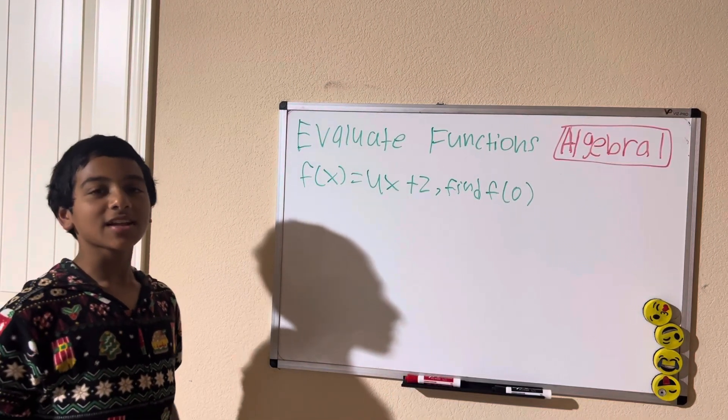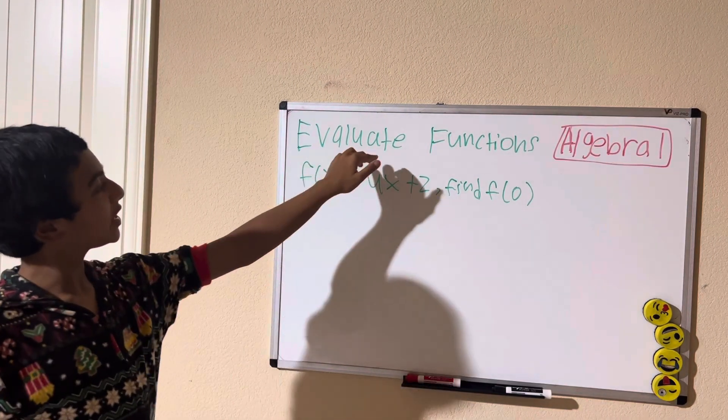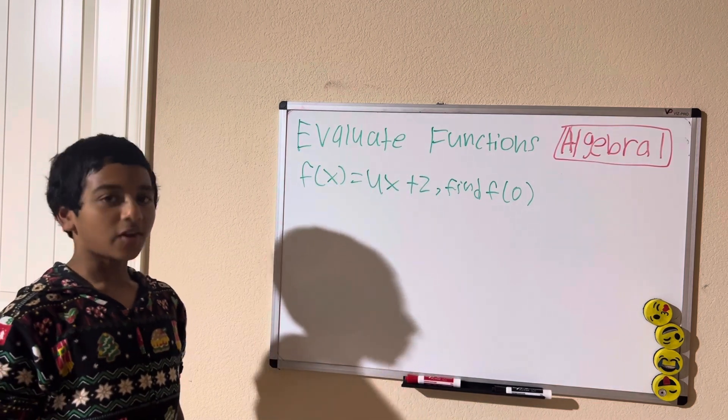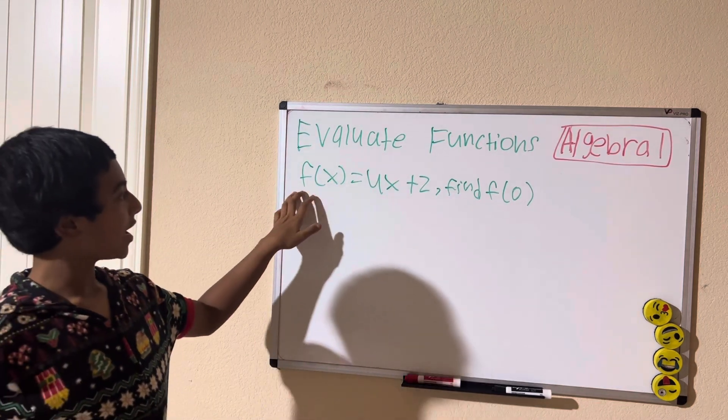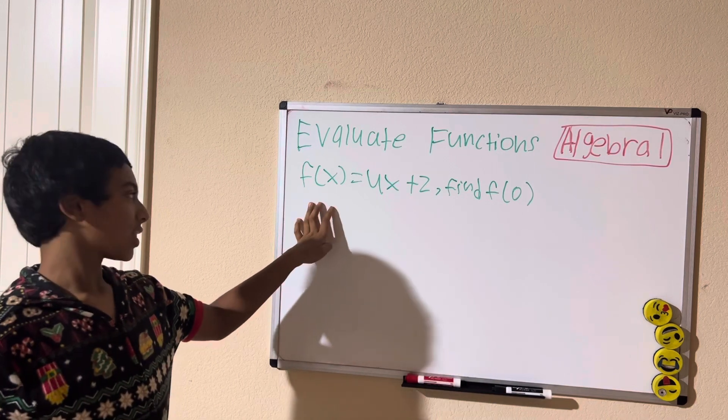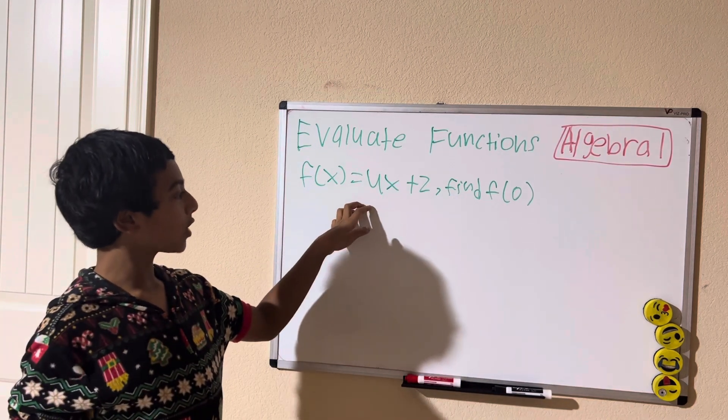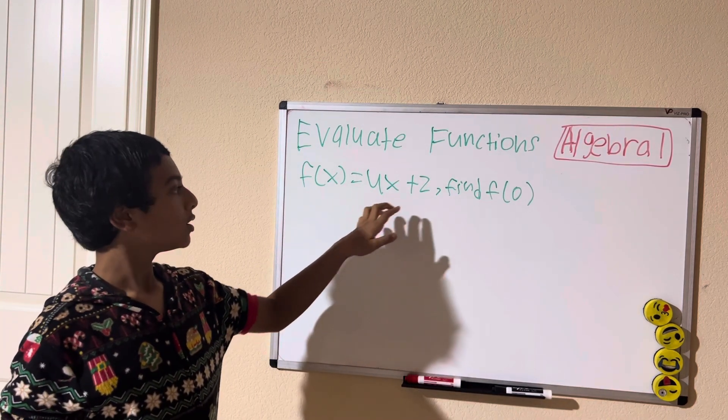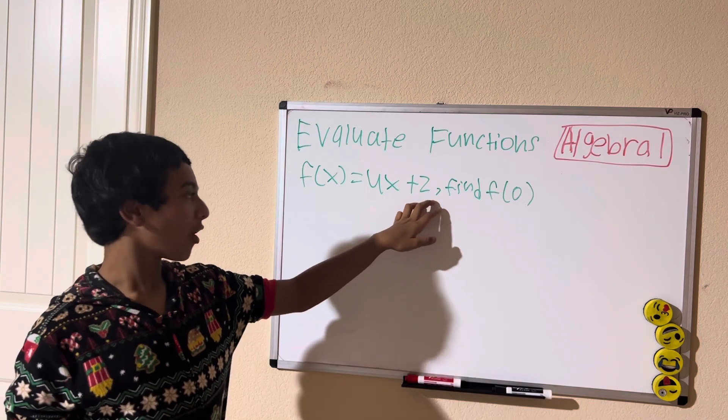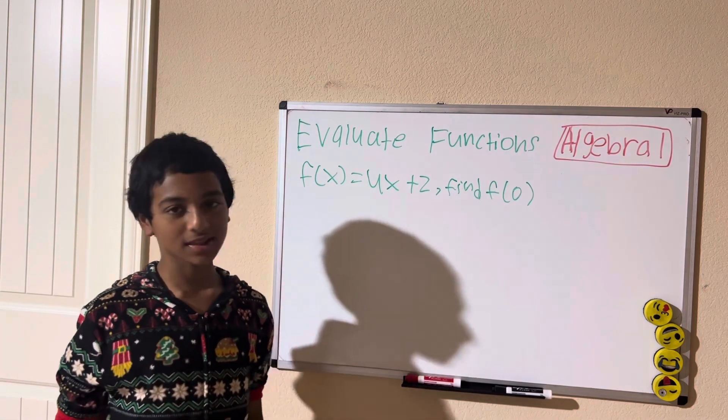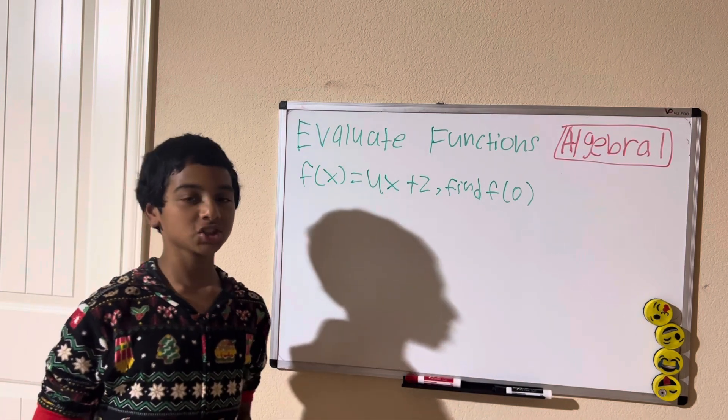Hi guys, in today's lesson we're going to be evaluating functions. A function is like this f(x) example equals 4x plus 2. So we're asked to find f(0). How would you evaluate this function?